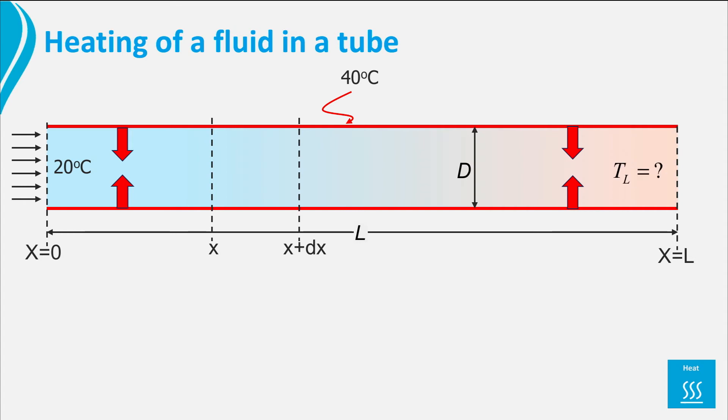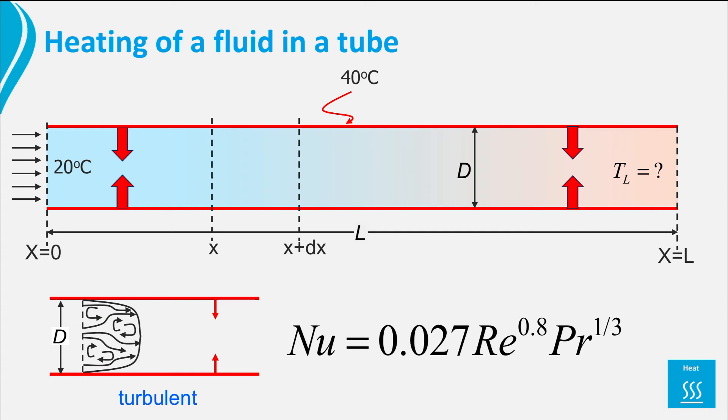To answer our question what the water temperature is at the exit of the pipe, we need to know if the water flows turbulent, because then we obtain the value of h from the correlation mentioned earlier in this video, which is valid for Reynolds number larger than 10,000. If the value of the heat transfer coefficient is known, we are able to calculate the value of the temperature at the end of the pipe, TL.